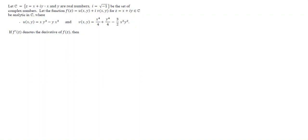Let me proceed to the next question. f(z) is equal to u(x, y) plus i into v(x, y). They given that z equals x plus iy, where x and y are real numbers and i is the root of minus 1, a set of complex numbers. u and v are functions of x comma y. The question is: if f'(z) denotes the derivative, then what is f'(z)? They have given options.